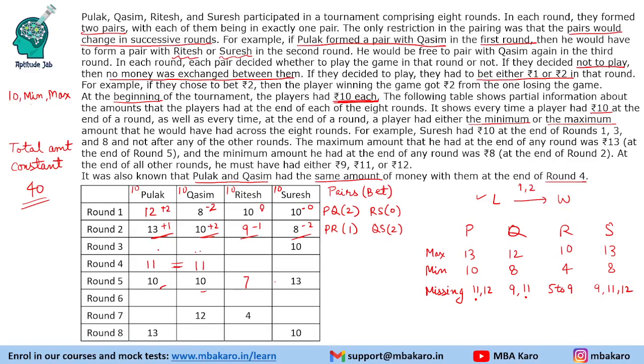Round 3 cannot be fully determined because three of the values are missing — if only two were missing we could have found them. What we do know is it is a 2-rupee gain for Suresh.